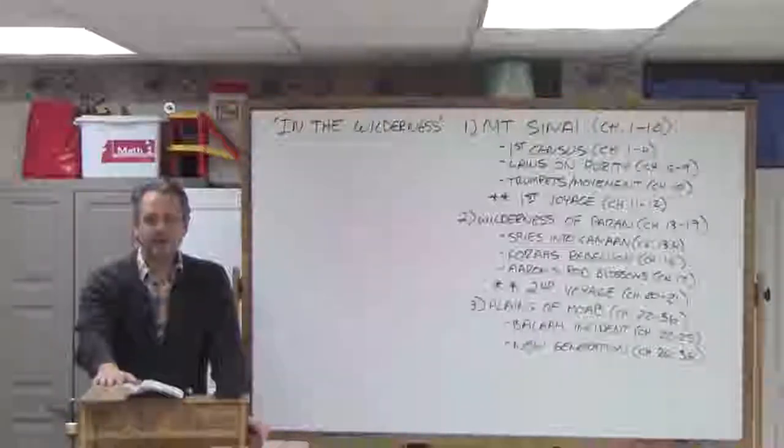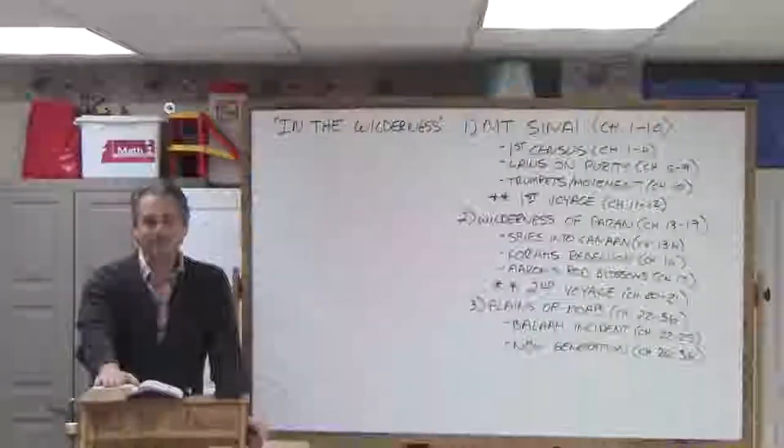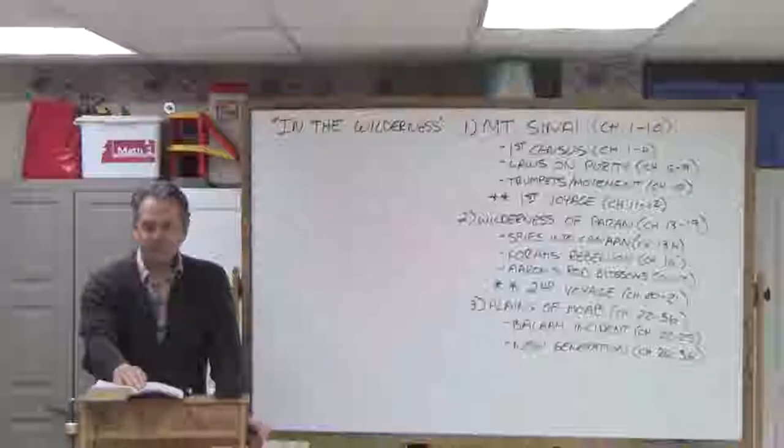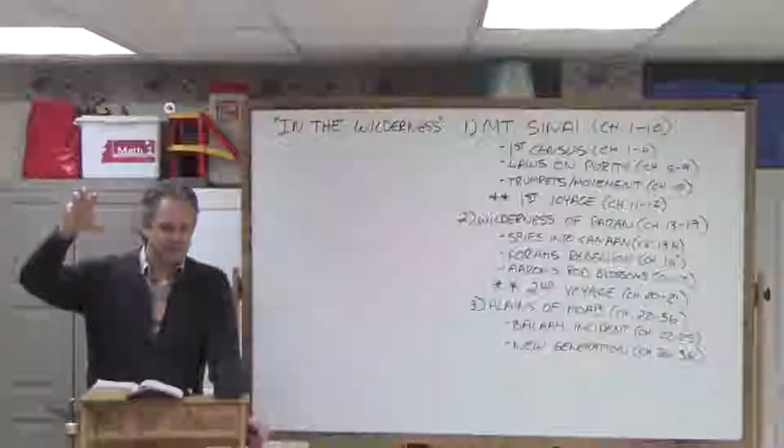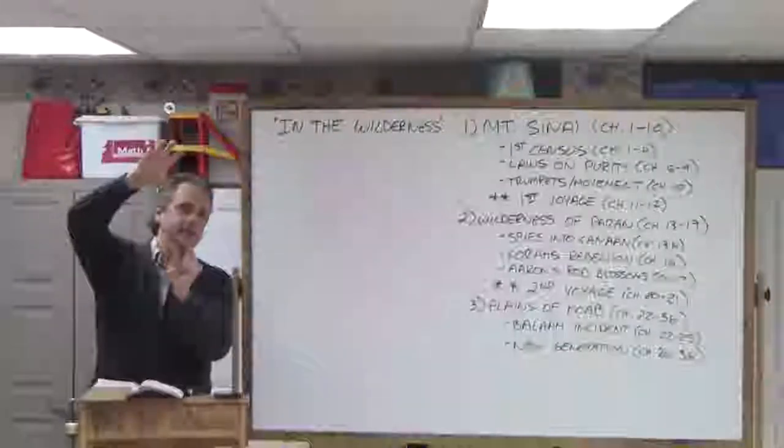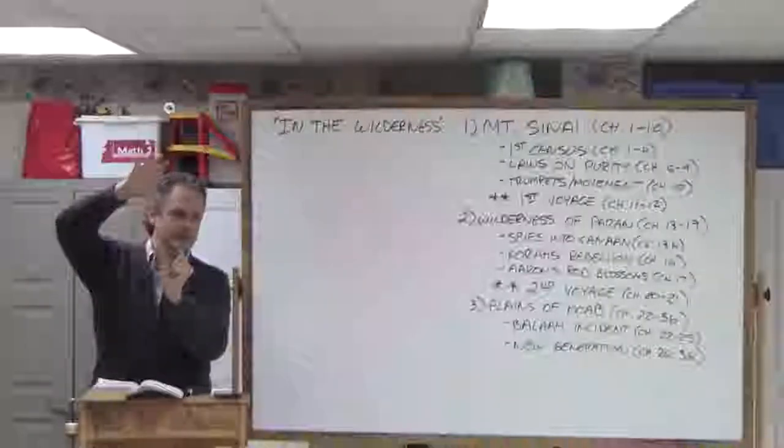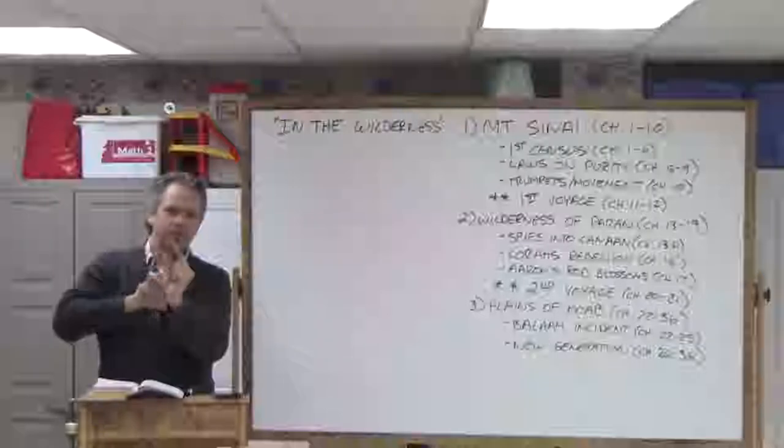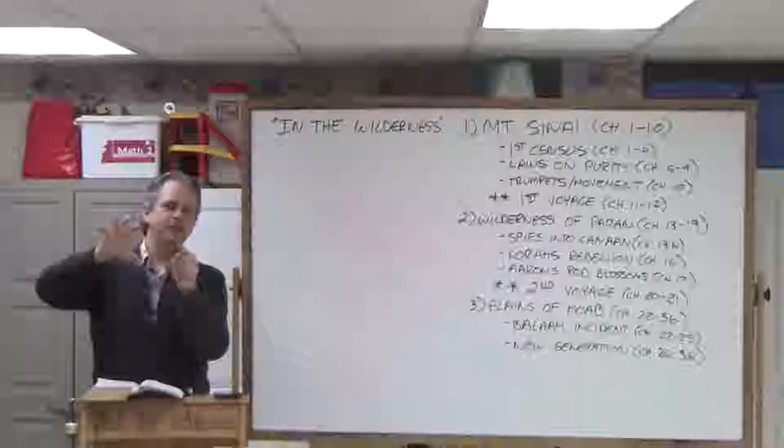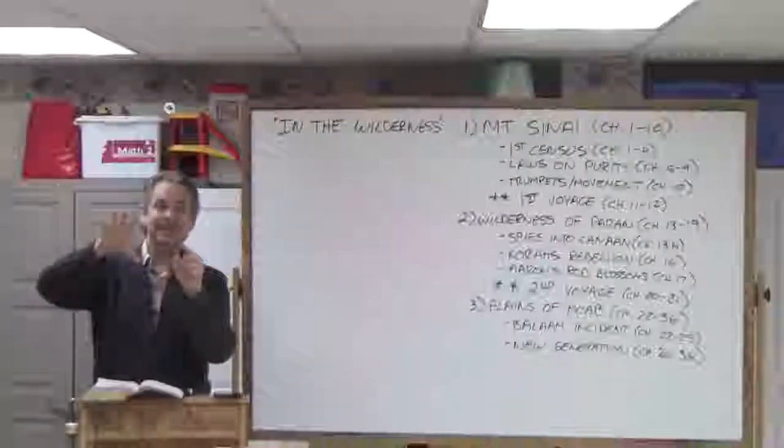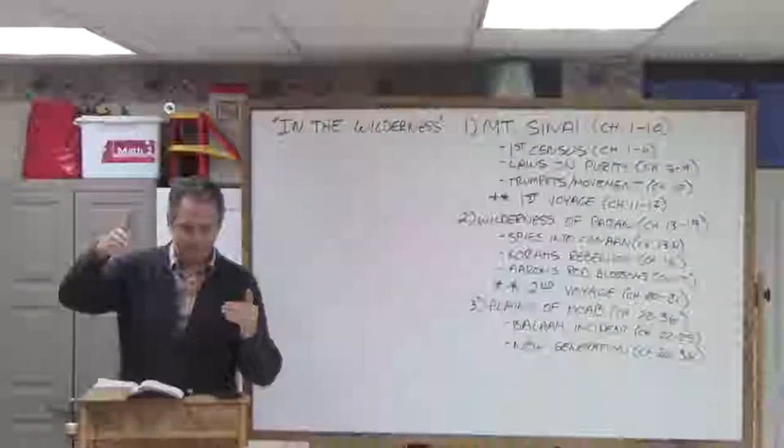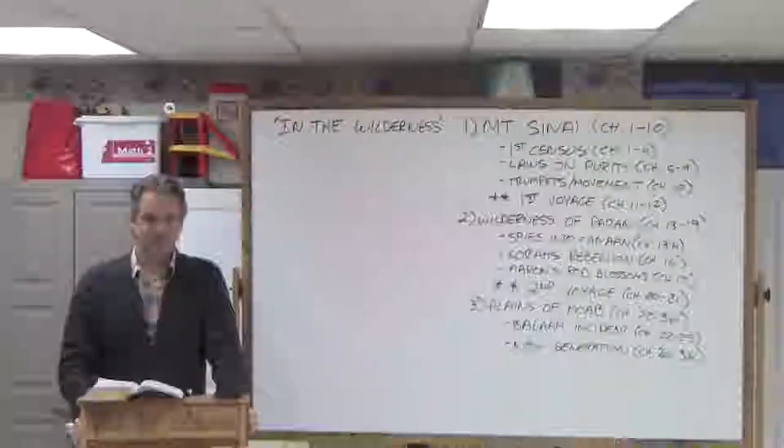So in Numbers we're still camped out at Mount Sinai. It has been one year. And we're going to travel from Mount Sinai all the way to a place called the plains of Moab. We travel all the way over to the east side of the Jordan, and they camp out right there at Moab, and they can see Jericho across the Jordan. It should take about two weeks to travel from Sinai to that place in Moab. In our case, it takes them 40 years.